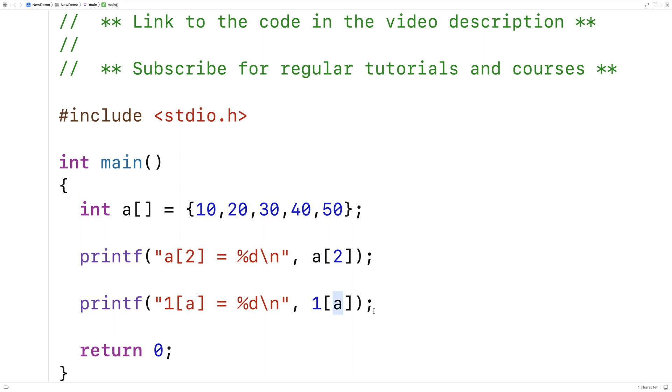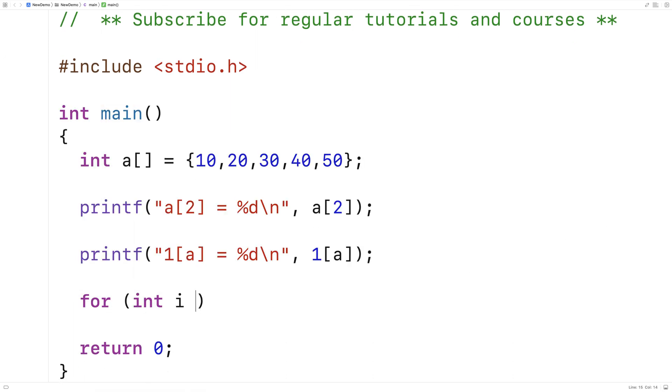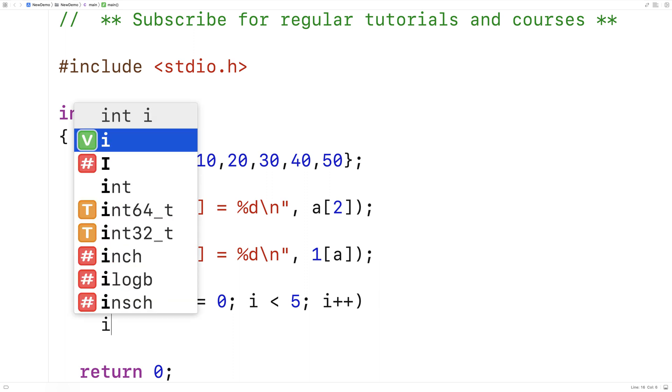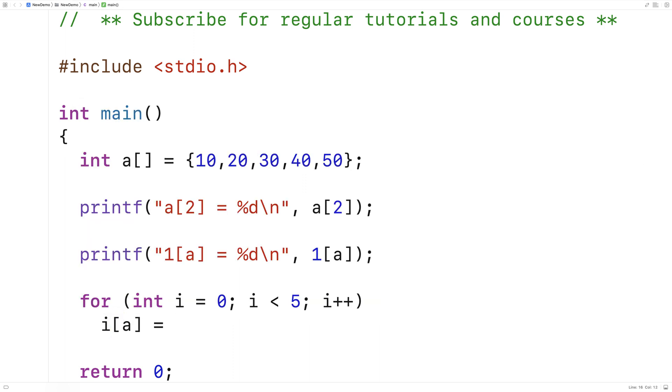We could even do it with a variable in a loop. So I could say for int i is equal to 0, i is less than 5, i plus plus, and we'll actually set each element of this array with this sort of notation. So we'll say i a is equal to, and I'll say here i plus 4.